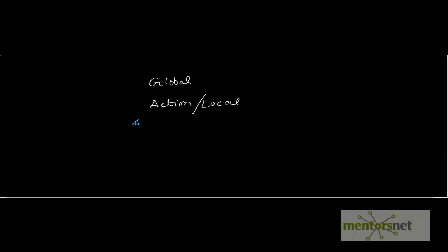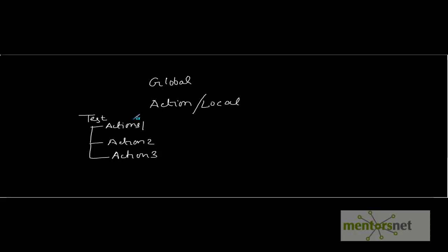In QTP there is one test, and within this test there are a number of actions. If you want to use data with all actions, global data sheets can be used. But if you want data within one action only — meaning you don't want to share data from one action to another — then local or action data sheets are used. There are different local or action sheets associated with the number of actions in the test.